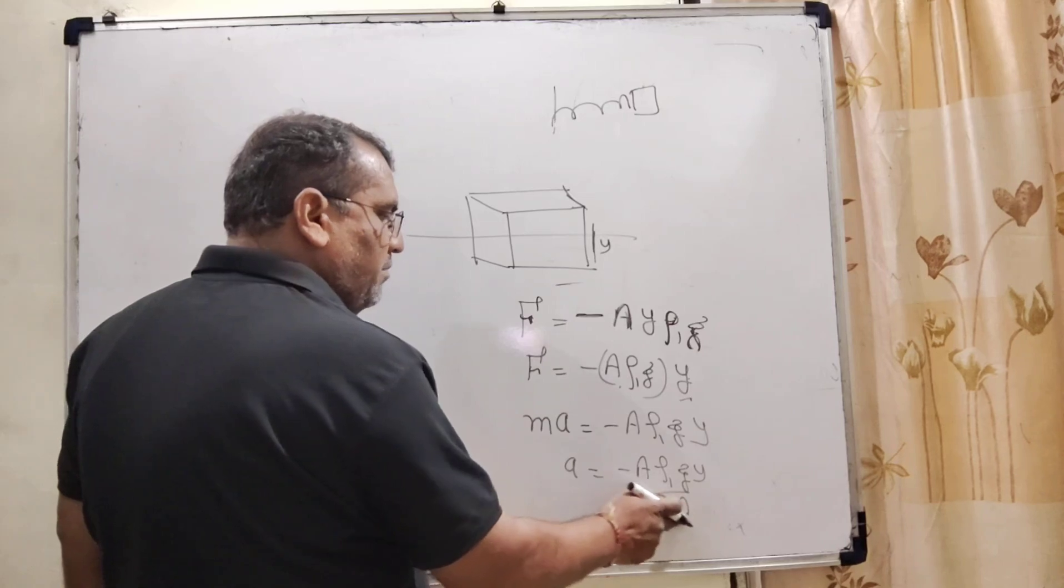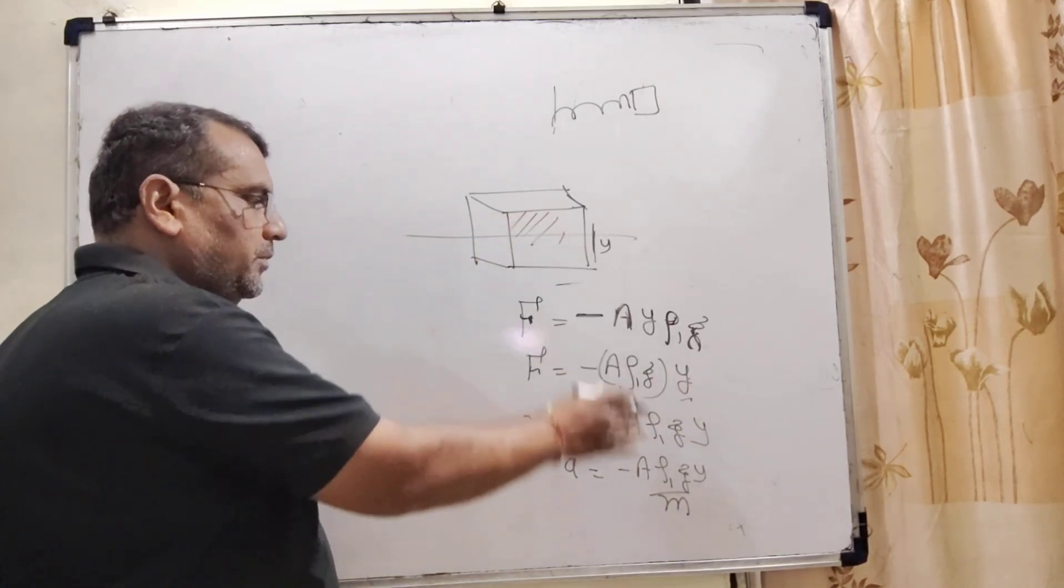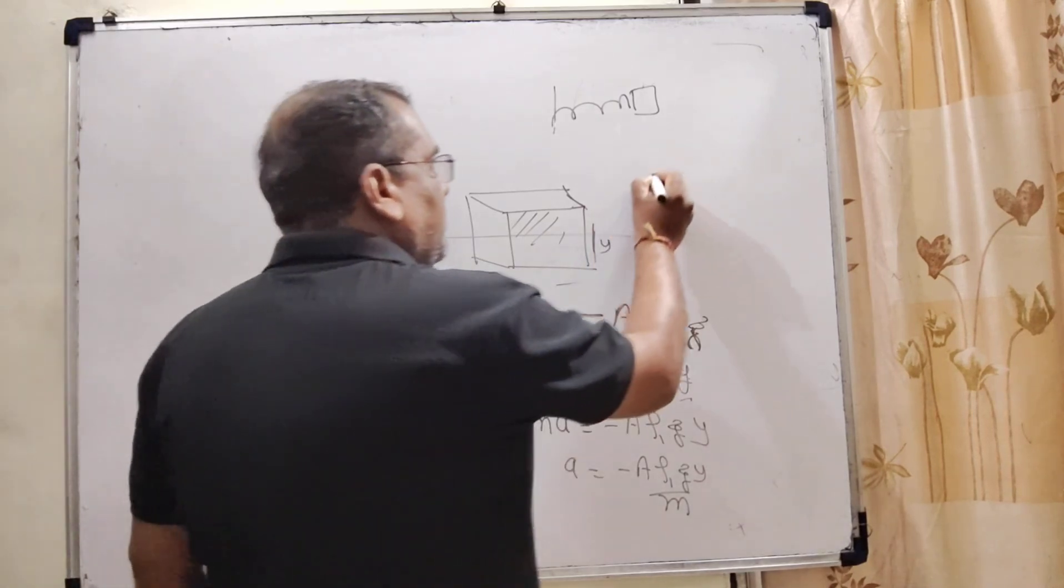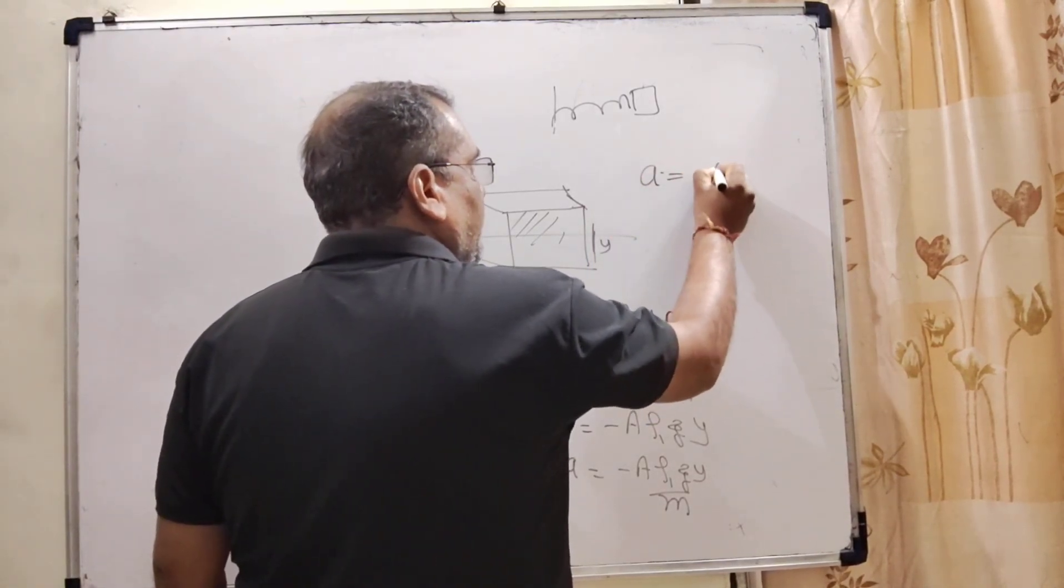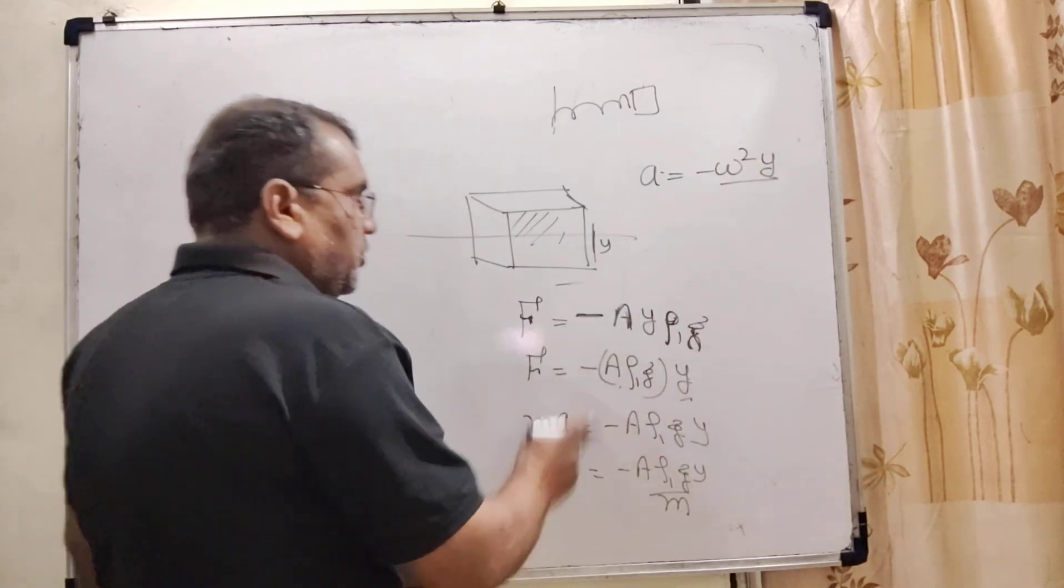Here, remember, m is the mass of the cubic block. As we know, for oscillatory motion, acceleration should be -ω²y.